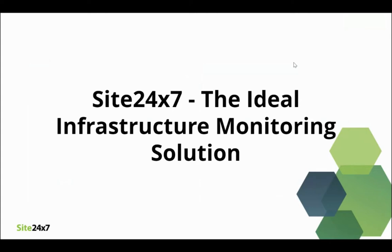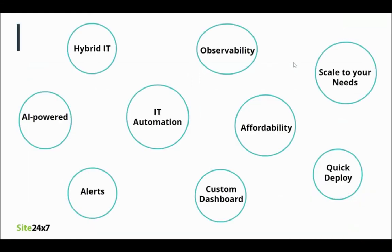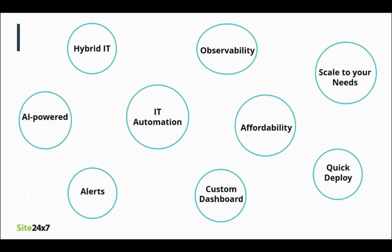With all the tips done for charting out your monitoring strategy, let's look at one such ideal monitoring solution that covers all the discussed aspects and more. Site 24-7 is an all-in-one monitoring solution for your IT infrastructure — bringing the entire data on a single pane, AI-powered intelligence capabilities, timely notifications on outages, automatic incident remediation, and presenting data through customized dashboards. Site 24-7 does it all.